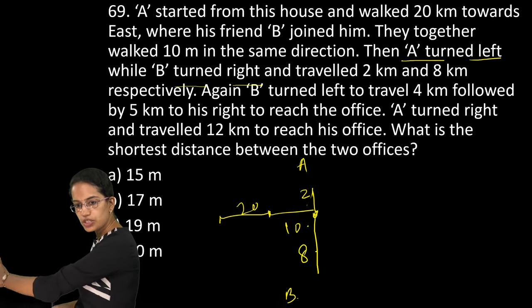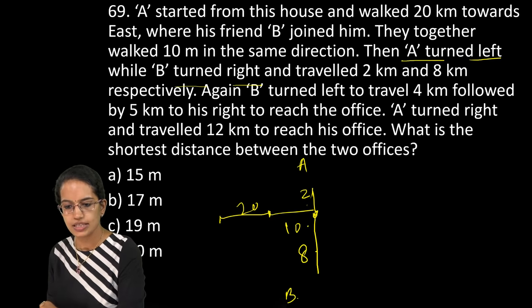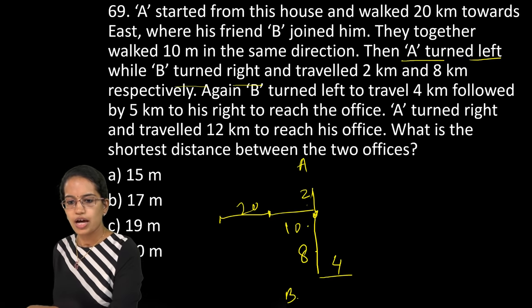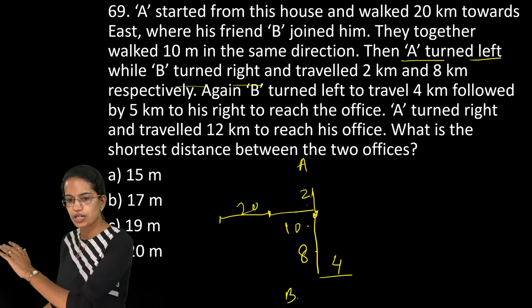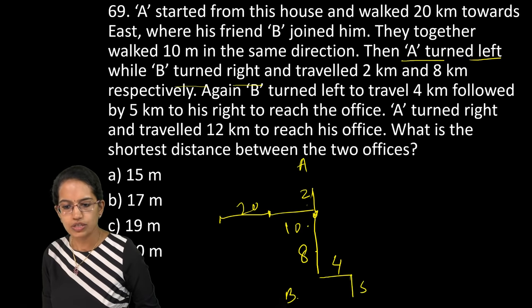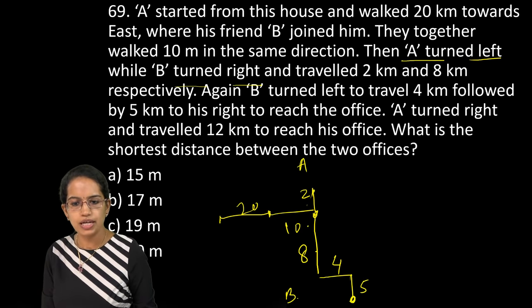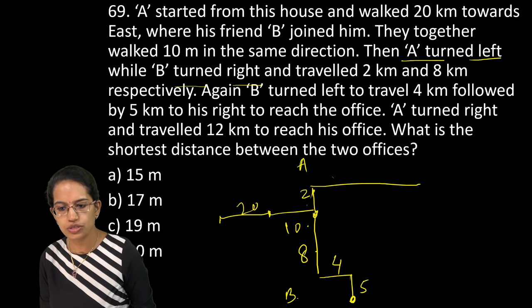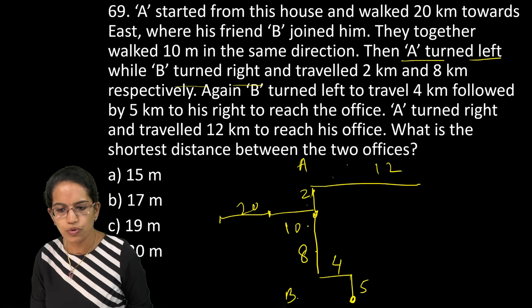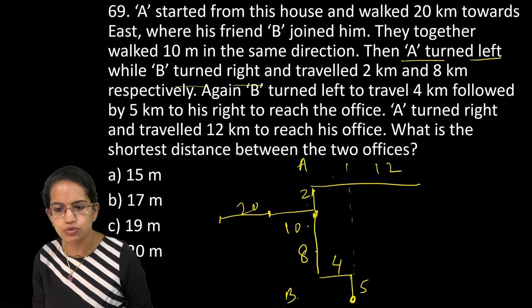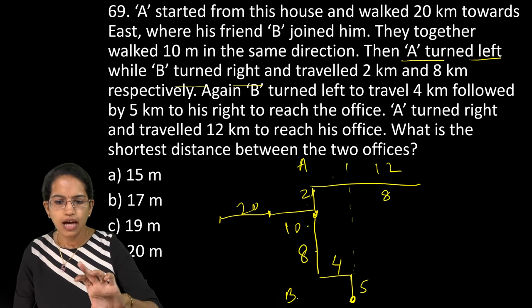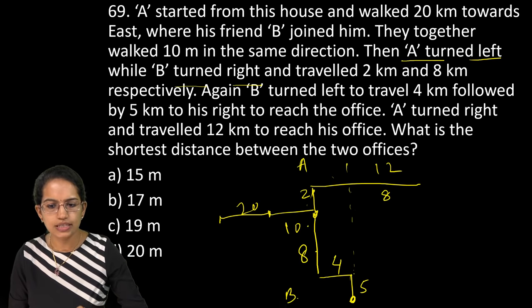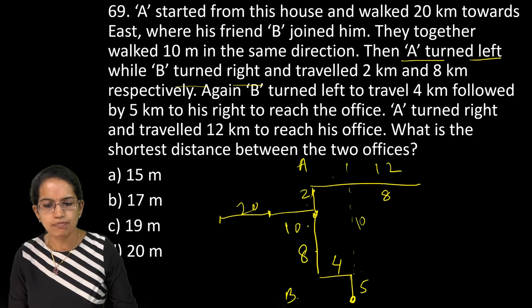A turns left while B turns right. So A would be turning left and B would be right. So A in this direction, B in this direction and travels 2 and 8. So we missed this. This was 2 and this was 8. Now B turns left from this position, it would turn left. That is this side. It would go 4. And once it has gone 4, it would turn right and go 5. So this would be the position for B's office.